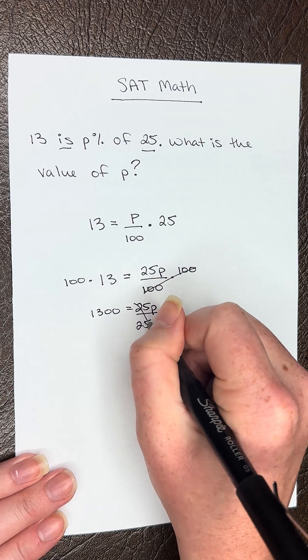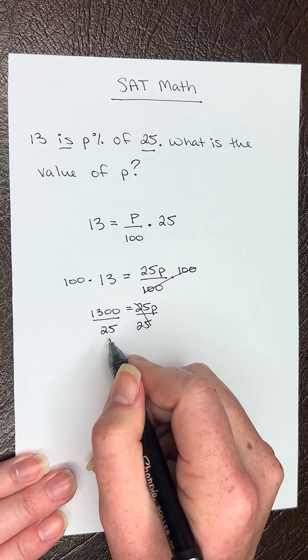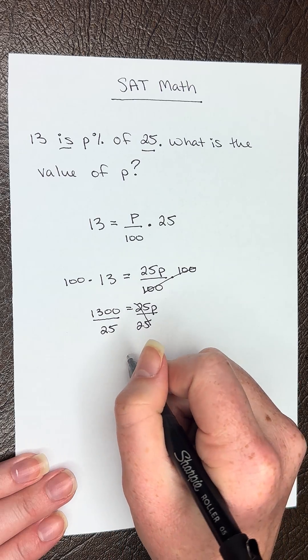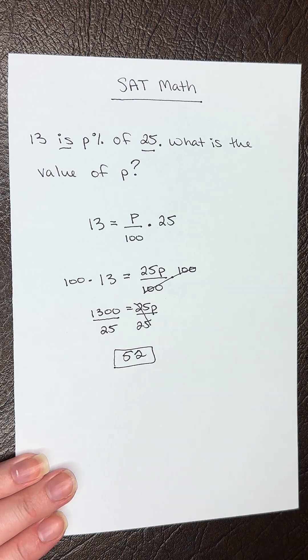Now divide by 25 on both sides. 1300 divided by 25 is going to give us 52, which is our final answer.